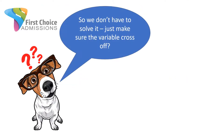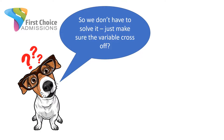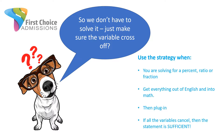I know what some of you are thinking: we didn't solve down to the exact value of that ratio. That's exactly right — we don't have that kind of time. Data sufficiency is only asking you if you have enough information to get to an exact value for that ratio, and we know we do if all the variables cross off. We don't have to calculate that exact value. So when you're solving for a percent, ratio, or fraction, get everything out of English and into math, plug it back into the ratio, and if all the variables cancel, the statement is sufficient.